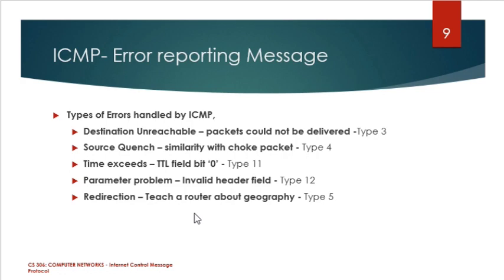Destination-unreachable means it is sent by a router in response to a packet which it cannot forward because the destination is unreachable. The router reports a response message when the destination cannot be reached and the packet cannot be properly delivered.